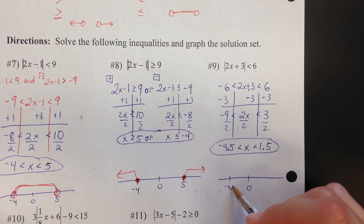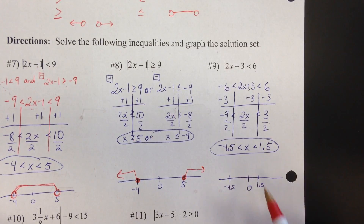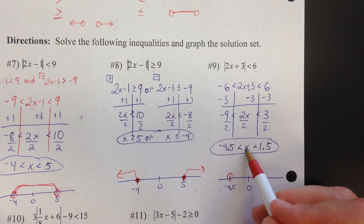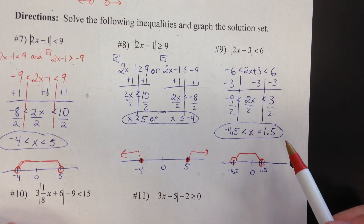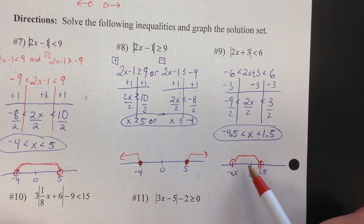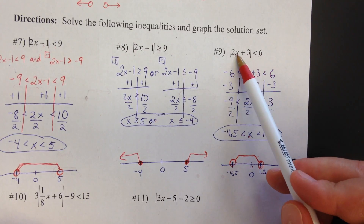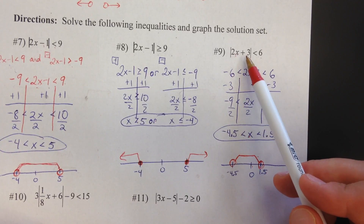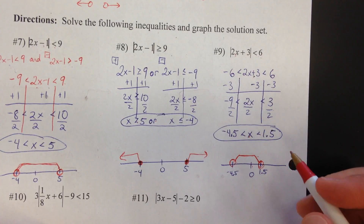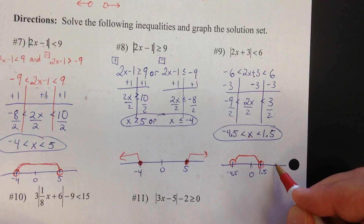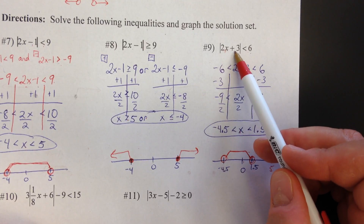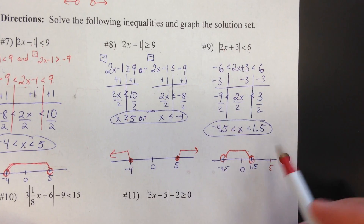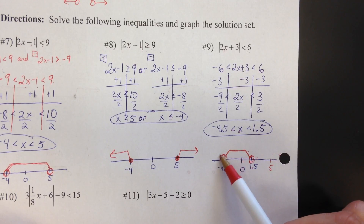So on the number line: negative 4.5 and 1.5. Now these are both going to be open circles, and again the x is between those values — that's our solution set right there. If you ever have a question, you can always go ahead and plug a value in. For example, let's say zero — that's part of the area I shaded. If I put a zero in, two times zero is zero, plus three is three. Is the absolute value of three less than six? Yes. So zero works. What if I try five? Two times five is ten, plus three is thirteen. Is the absolute value of thirteen less than six? No.